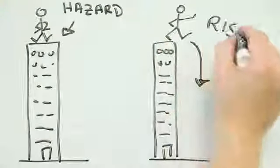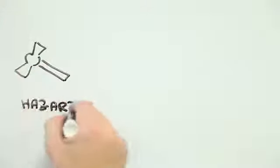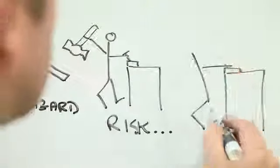Standing on the edge of a tall building is hazardous. Stepping off the edge is a risk. A hammer sitting on a workbench is a hazard. Using it is a risk, especially if you're cack-handed.